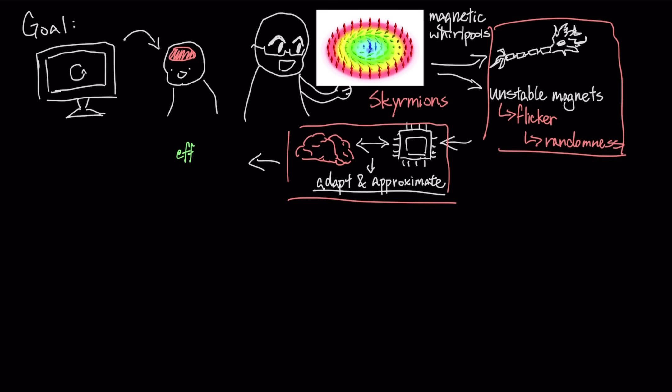This offers a massive leap in efficiency because just one of these unstable magnets can do the job of a complex random number generator circuit that normally requires hundreds of transistors. There is, however, a significant manufacturing barrier.